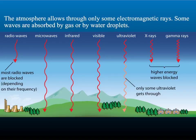As only some electromagnetic waves are able to pass through our atmosphere, some of them are absorbed by one of the many gases, others by water droplets. Whether an electromagnetic wave passes through depends on its wavelength and its frequency.